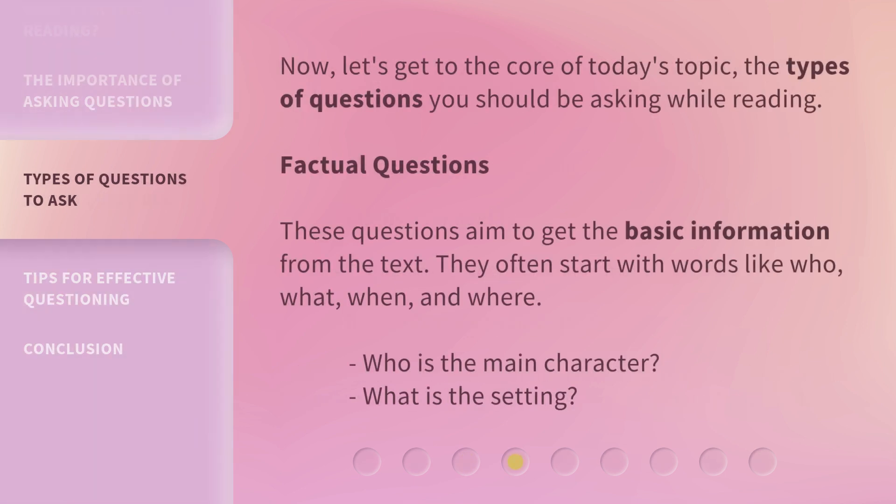Now let's get to the core of today's topic: the types of questions you should be asking while reading. First, factual questions. These questions aim to get the basic information from the text. They often start with words like who, what, when, and where. For example: Who is the main character? What is the setting?